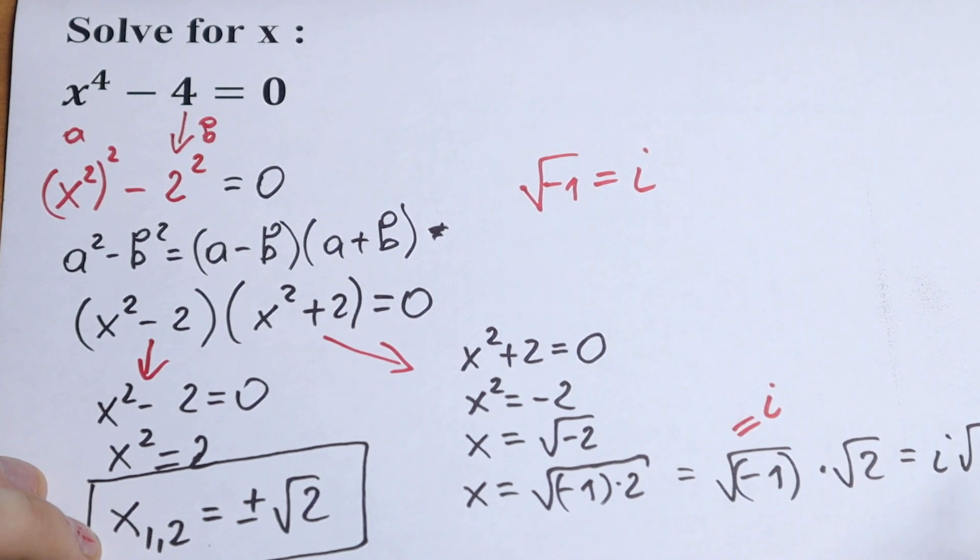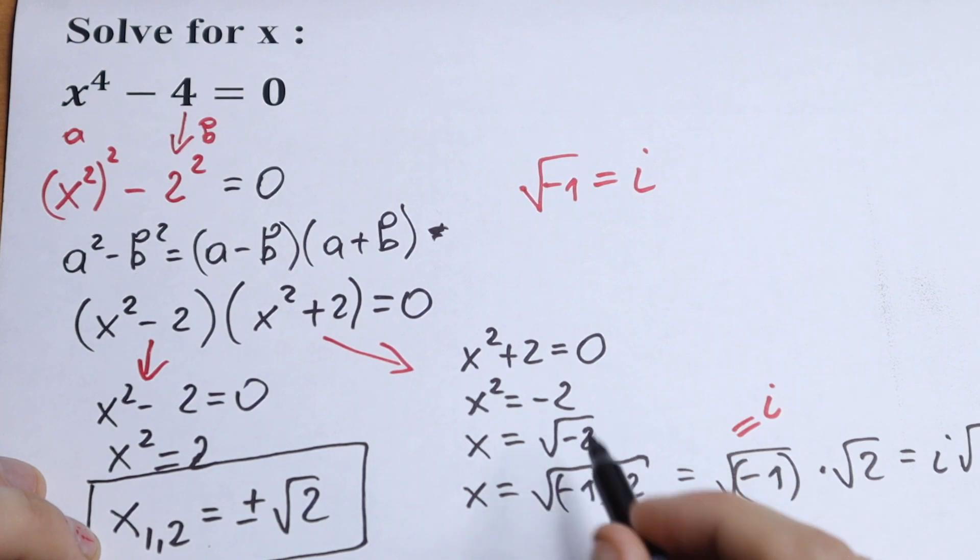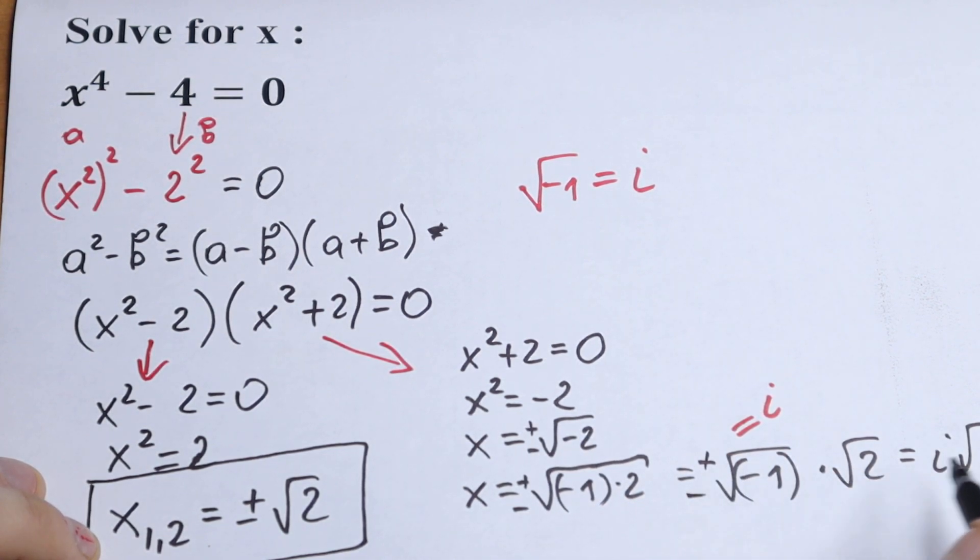So we will have equal to i square root of 2. And of course we're taking square root from both sides. So right here we need to write plus minus. And we will have our roots.